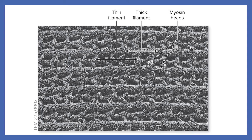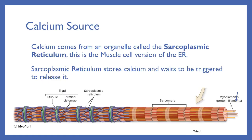I hope seeing that in action helps with the understanding of what's going on inside those muscles. This is the real-life version of what you saw in the video — an electron microscope view of the thick and thin filaments with their myosin heads. The calcium that is used by your muscles comes from an organelle called the sarcoplasmic reticulum, which is the muscle cell version of the endoplasmic reticulum. The sarcoplasmic reticulum stores the calcium and waits to be triggered to release it. Here's a picture of a myofibril — on the left side we can see the sarcoplasmic reticulum shown in blue surrounding it with a network, and on the right side it has been stripped away so we're able to see the sarcomeres and the myofilaments.